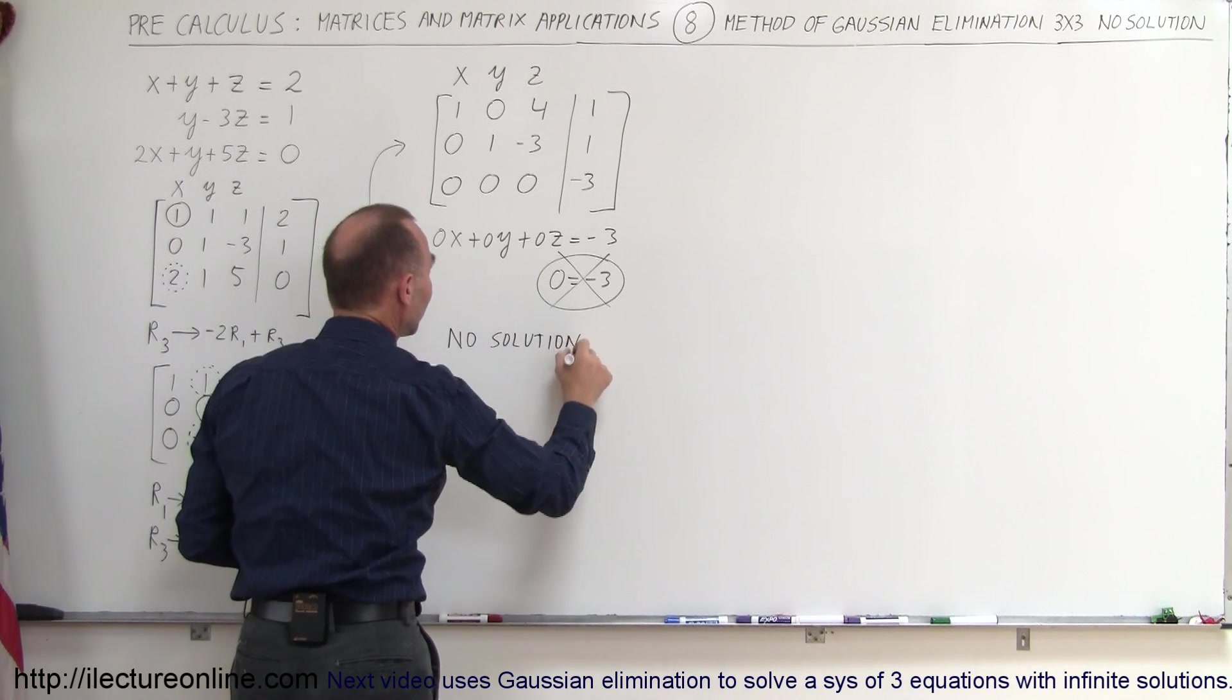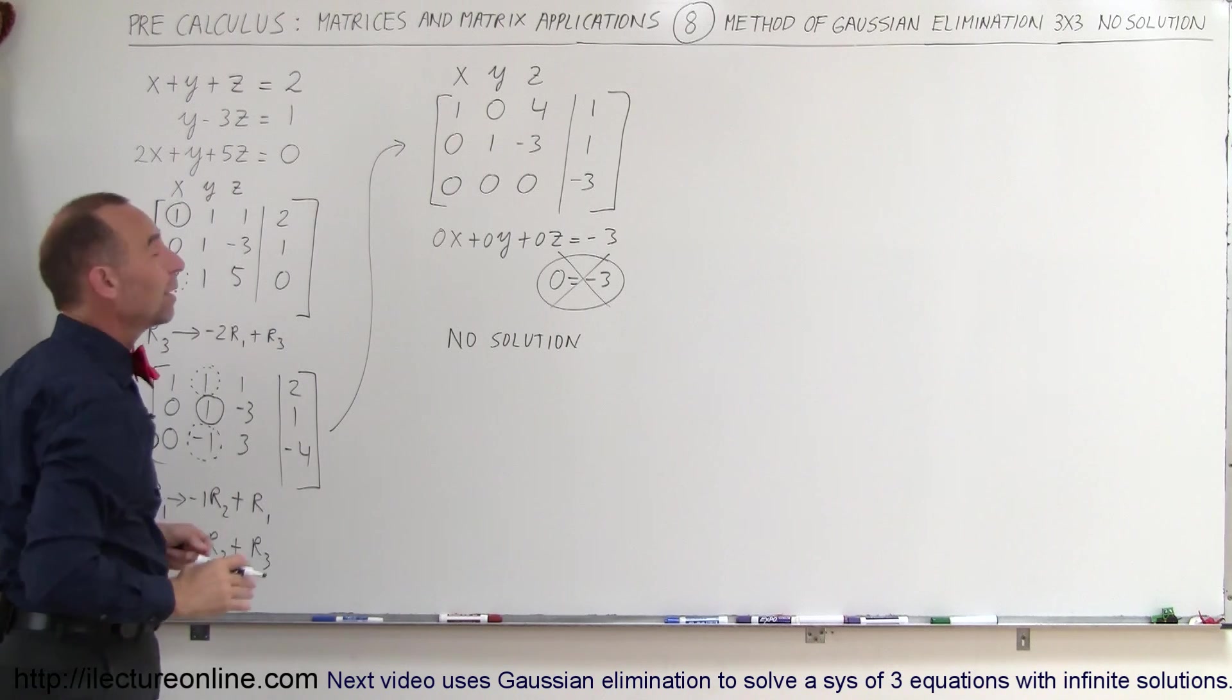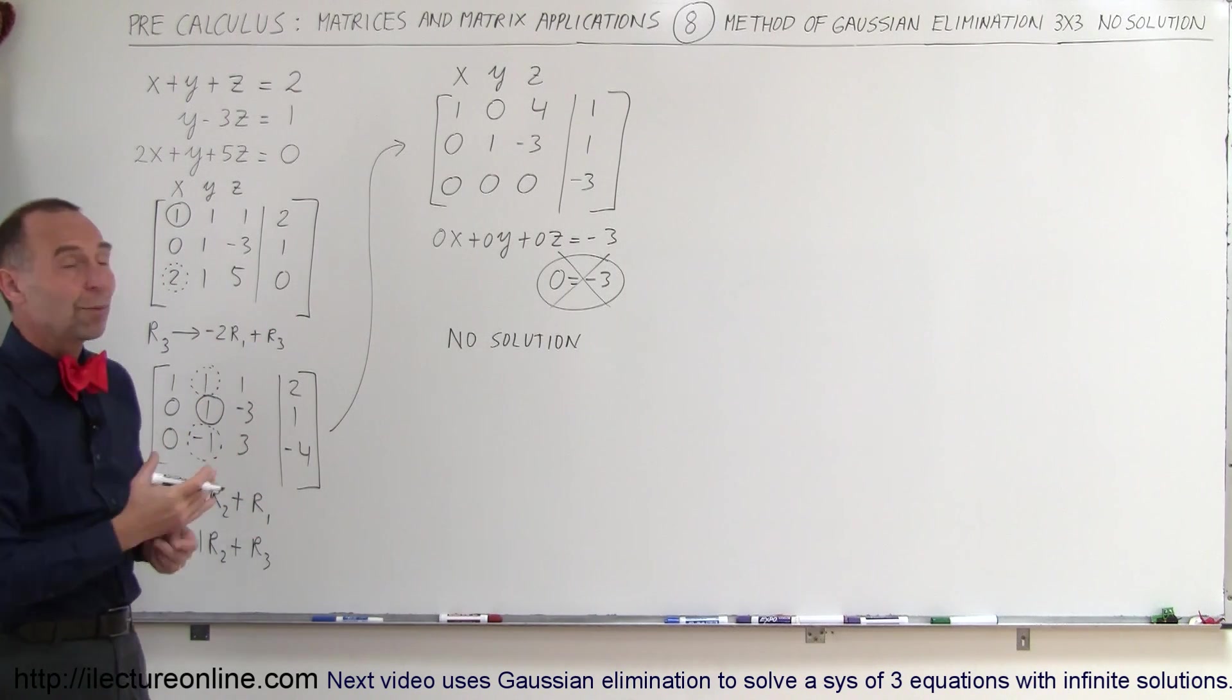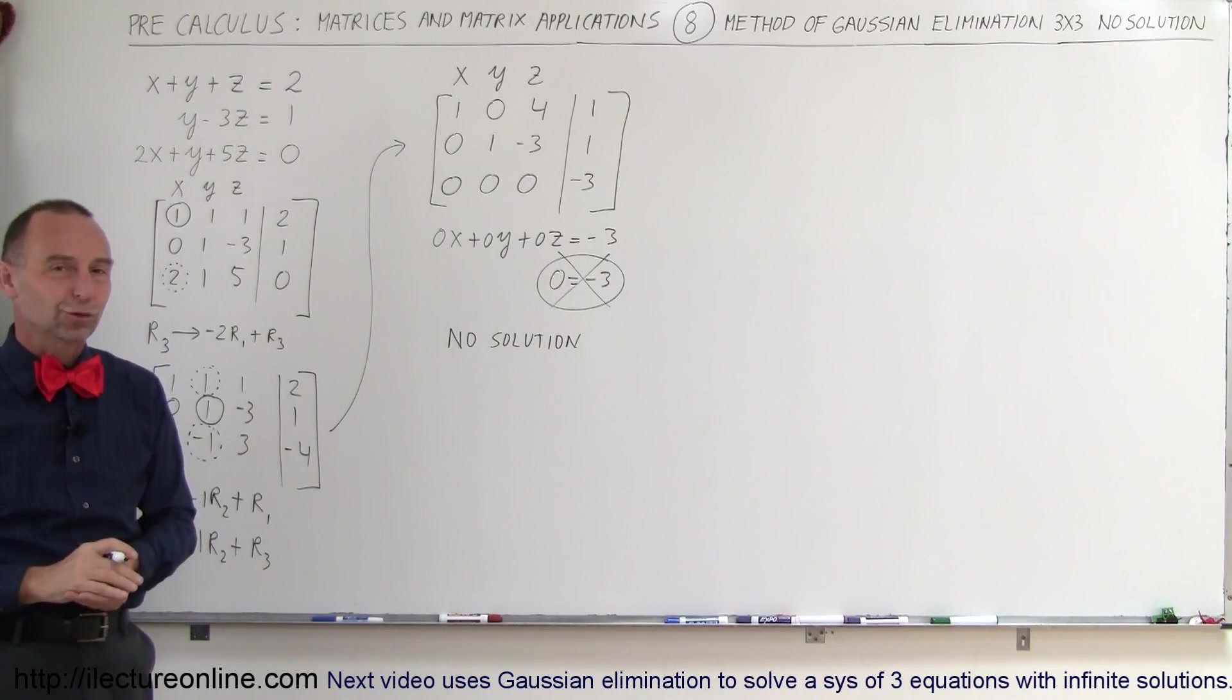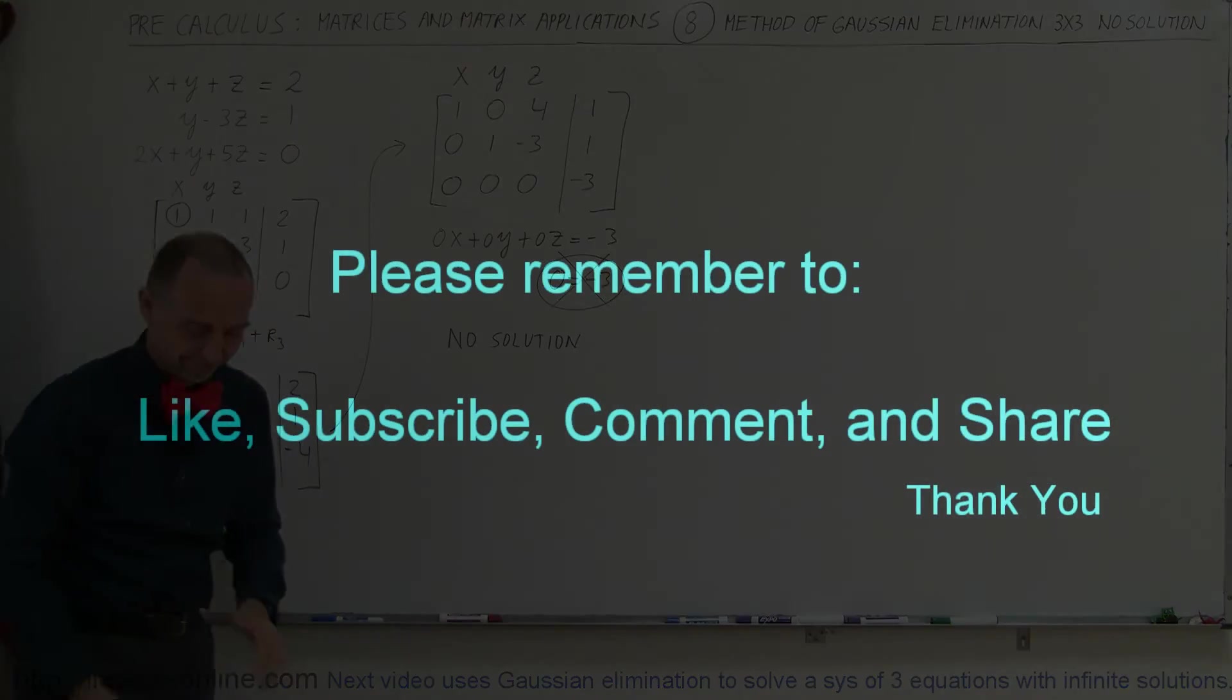There's no set of x, y, and z values that allows us to find a common point in space where all three of the planes meet. So that's what happens when we have a case where there's no solution.